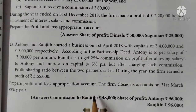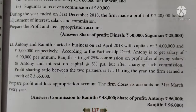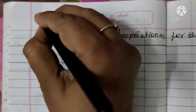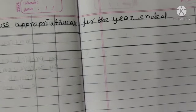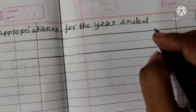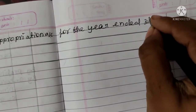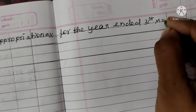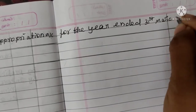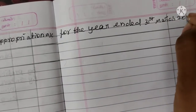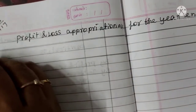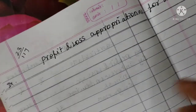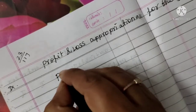Profit and Loss Appropriation Account for the year ended 31st March 2018. Let's format with the year ended and particulars columns on both debit and credit sides.